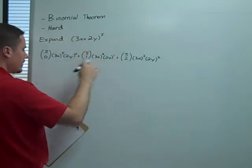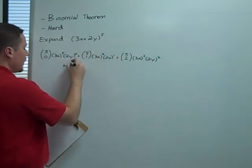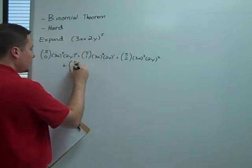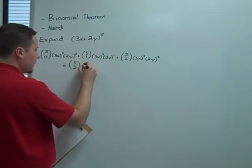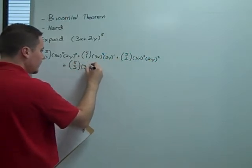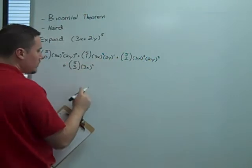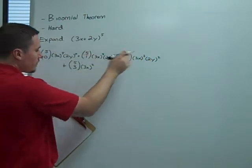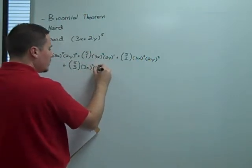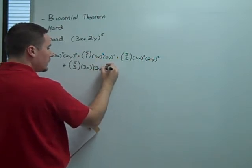And I'm going to go on to a new line, this is still the same problem, plus 5 choose 3 times 3x to the second, because 5 minus 3 is 2, and it follows the pattern 5, 4, 3, 2. Then 2y raised to the third.